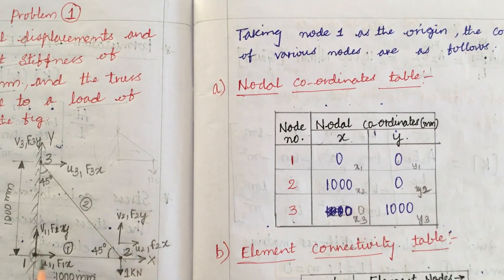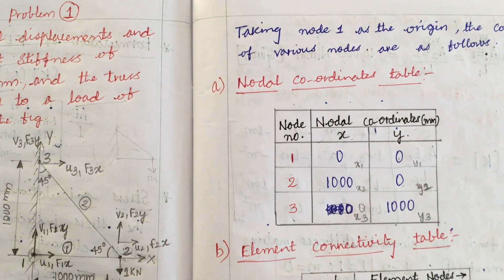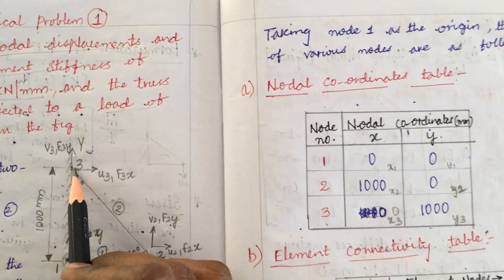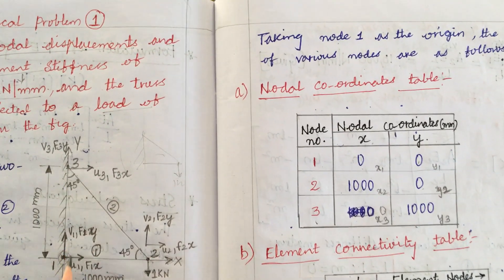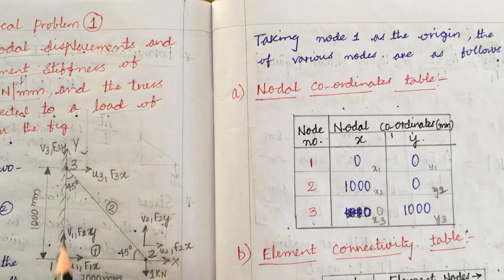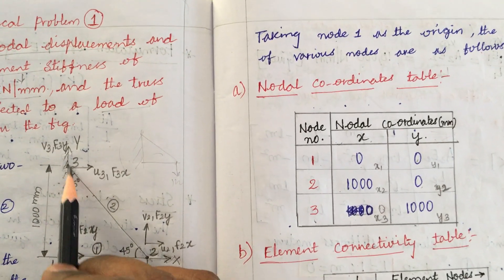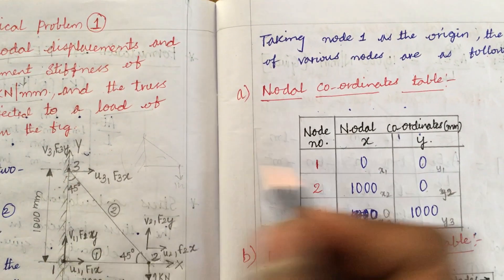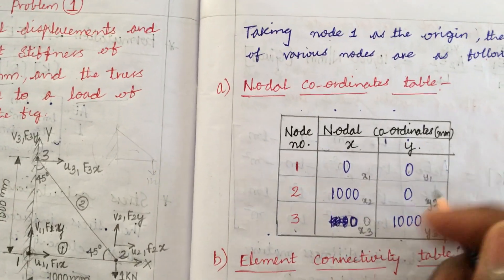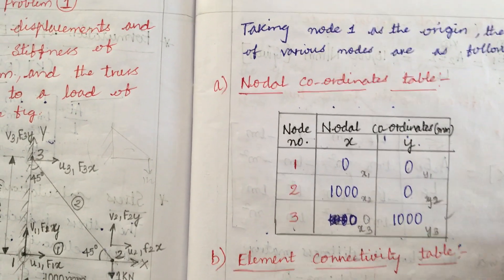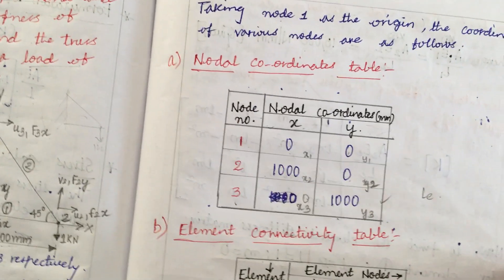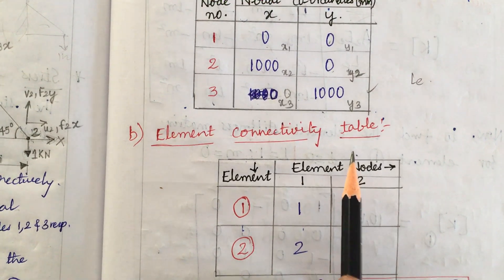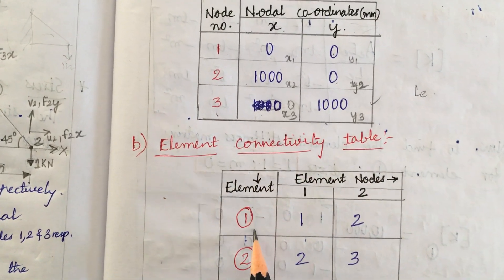There is no y coordinate along this direction; it is only along x. Coming to node 3, it is along the origin vertically, so x = 0. The y value from origin is 1000 mm. This is how we work out the nodal coordinate table to determine the complete length of each element. After this, we work out the element connectivity table.